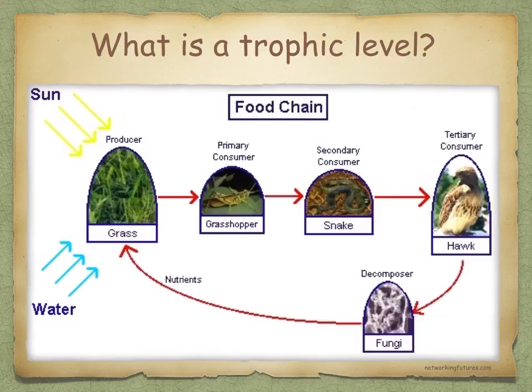So what's a trophic level? Each stage in the food chain is called the trophic level. The first trophic level is represented by the producers, the second by herbivores, and all subsequent ones by carnivores. The shortest food chain is usually about three levels and the longest is no longer than five levels.